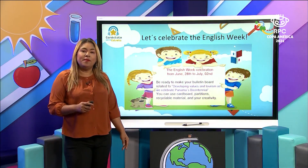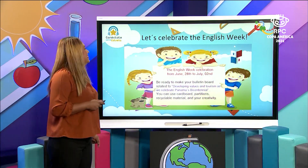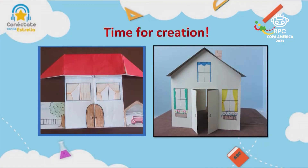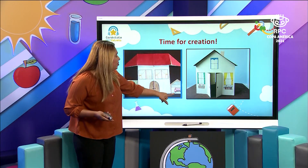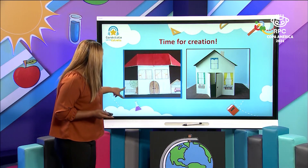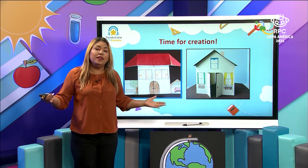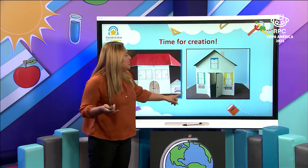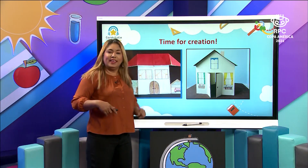Let's participate to celebrate the English week. For the creation time, we have two different ways to make houses. Remember we can use simple materials such as paper, cardboard, cartoons, whatever you have at home and your imagination. This time you can add the external parts of the house — for example, the garage. You can also put a car into the garage, and make a beautiful garden in front of the house. It's just to use your imagination.